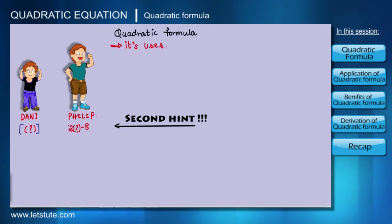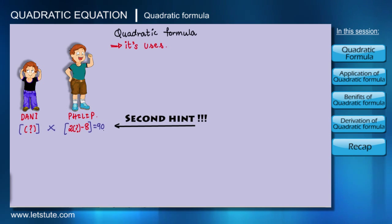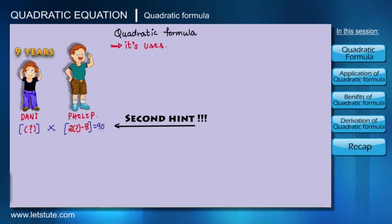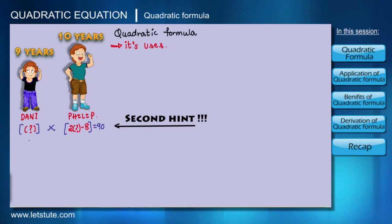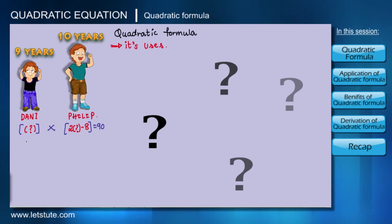So they gave me a second hint: the product of their ages is 90. Without taking much time, I could tell them their ages — Danny is nine years old and Philip is ten years old. They were surprised by my quick answer and asked how I did that.